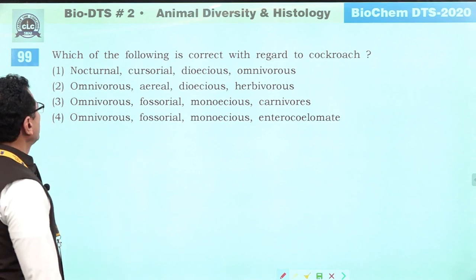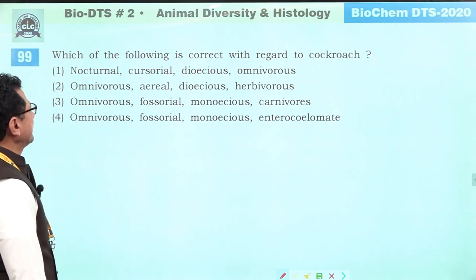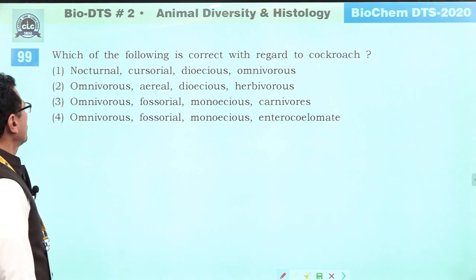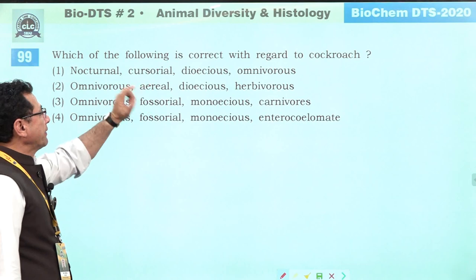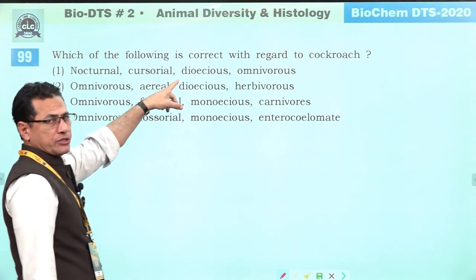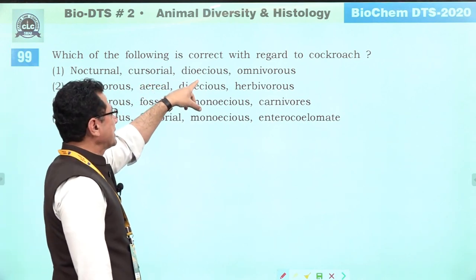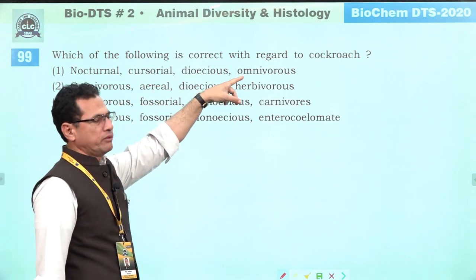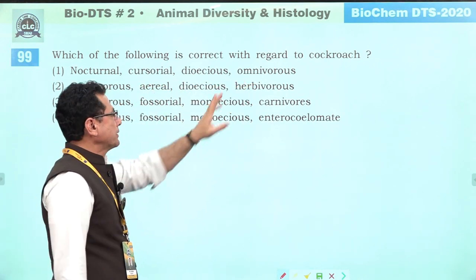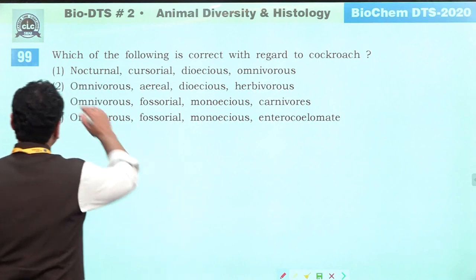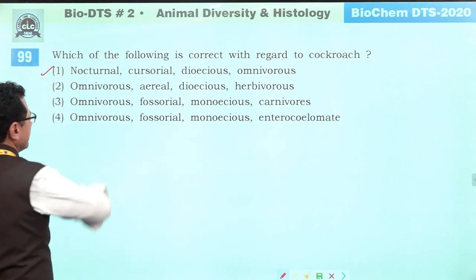Which is correct about cockroach? It is a nocturnal animal, cursorial (running), dioecious (male and female separate), and omnivorous — it can eat everything. Answer is one.